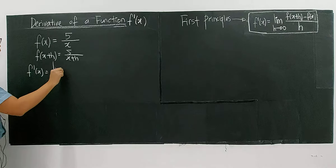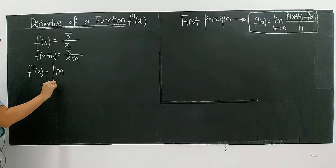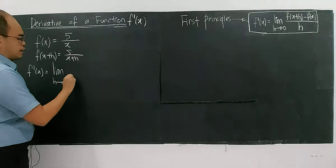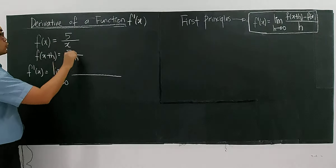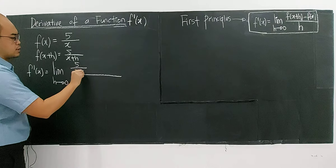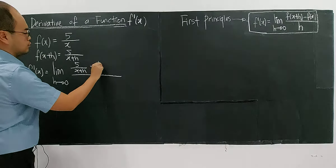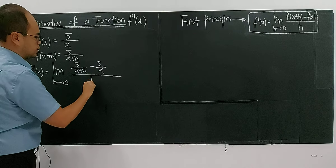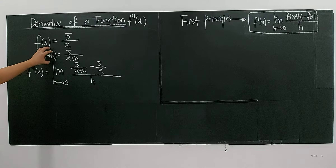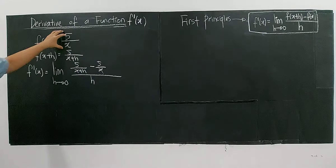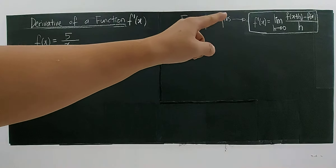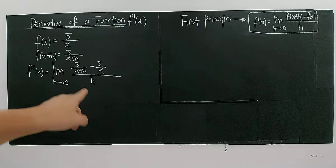Now I can apply the first principle, which is the limit as h approaches zero. So f(x+h) is 5 over (x+h), minus 5 over x, divided by h. This is f(x+h) minus f(x) over h, and I have already applied the first principle.